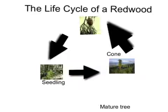The last stage of a redwood is a mature tree. During this stage, the redwood has bigger and bigger branches. A redwood can be 3,000 years old. This is the life cycle of a redwood.